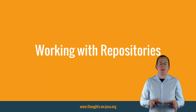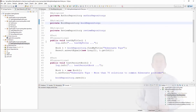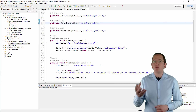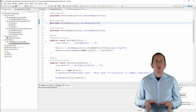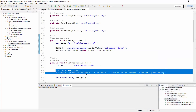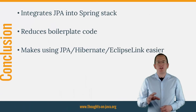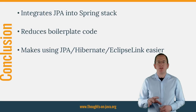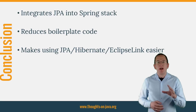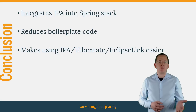In your business code, you can then use the injected repository to read entities from the database and to persist new or changed entities. The test class in the following code snippet uses the BookRepository to find a Book entity with the title 'Hibernate Tips' and to persist a new Book entity. Spring Data JPA seamlessly integrates JPA into the Spring stack and its repositories reduce the boilerplate code required by the JPA specification. Most features, like Object Relational Mapping and Query Capabilities, are defined and provided by the JPA specification and its implementations, meaning you can still use all features of your favorite JPA implementation. Spring Data JPA just makes using them easier.